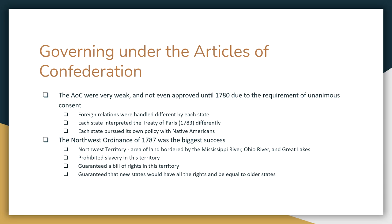The weaknesses of the Articles became very obvious very quickly. With foreign trade and foreign relations, each state went their own way. There were major problems with Britain embargoing trade between the states, and some states were more friendly with Britain than others. Each state also pursued its own policy when it came to Native Americans, so there were a lot of wars that weren't settled until 1789.